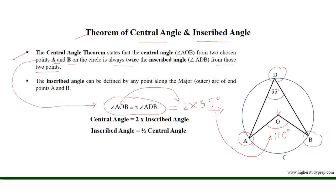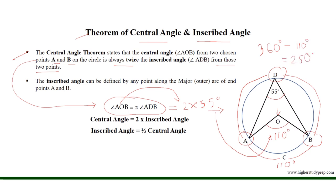Since angle AOB equals 110 degrees with endpoints A and B, the arc ACB has a measure of 110 degrees, which is the minor arc. The major arc ADB will have a measure of 360 degrees minus 110 degrees, which results in 250 degrees.